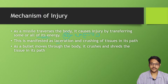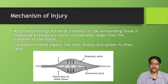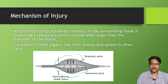This energy results in lacerations or crushing of tissue along the path through the body, shredding and crushing tissue in its path. As the projectile rotates within the body and surrounding tissue, it produces a temporary cavity considerably larger than the diameter of the bullet. Cavitation in solid organs like the liver, kidney, and spleen may often be fatal due to a large amount of hemorrhage and neurogenic shock.